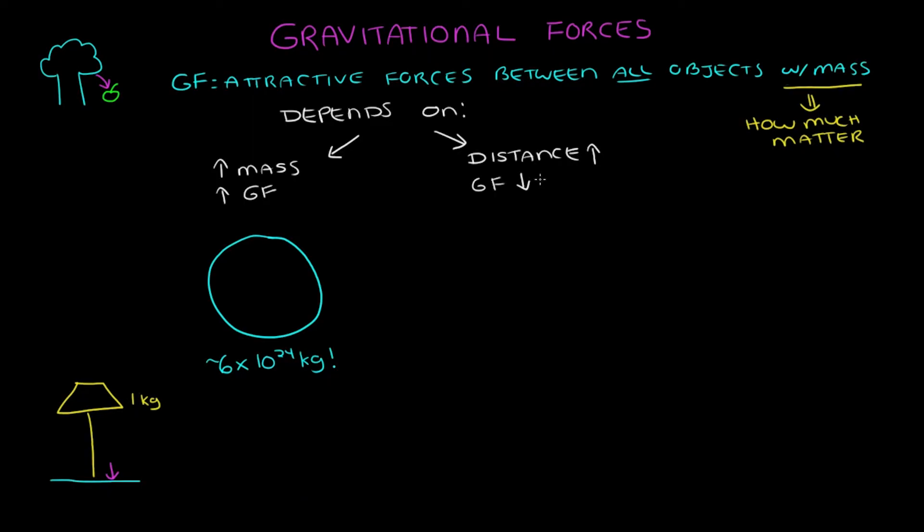For something like the Earth, you have to go really far away to not be affected by its gravitational force of attraction. I mean, look at the Moon. It's almost 240,000 miles away. That's almost 400,000 kilometers away. And it still feels effects from Earth's gravity. That's why it's orbiting us.